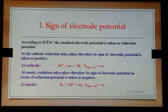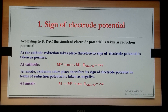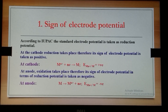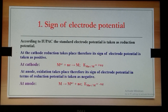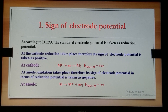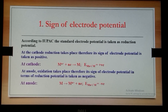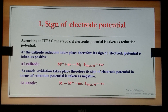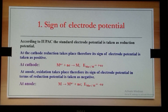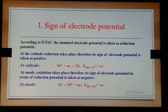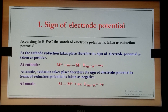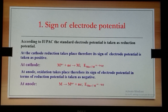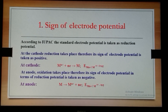To write the cathode, we should always write metal ions first followed by the metal, because it is the metal ions which accept electrons from the outer circuit and get reduced at the electrode. For writing the anode, we should always write metal first followed by metal ions, because it is the metal which gets oxidized and loses the electrons.